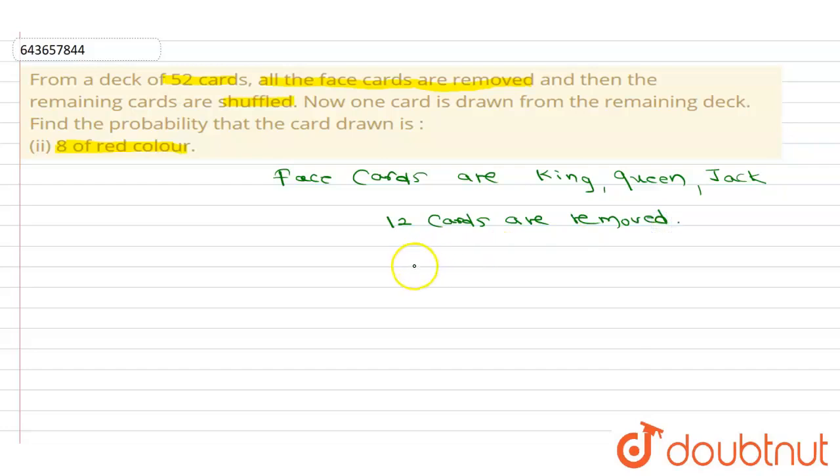Now, therefore number of remaining cards which is our sample space N is equal to 52 minus 12 which is equal to—13. This is our N of S.